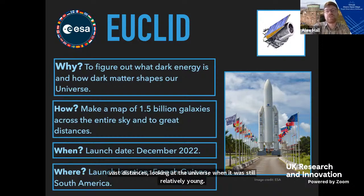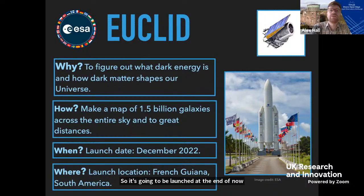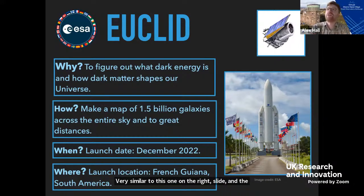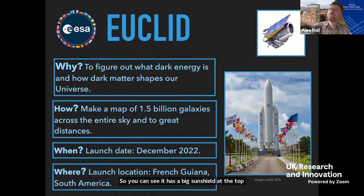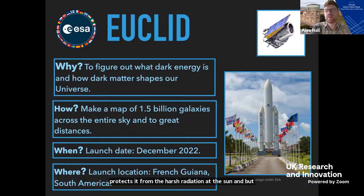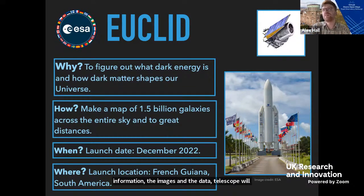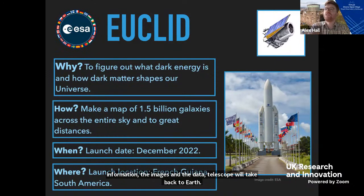Euclid is going to be launched at the end of next year — December 2022 — from the ESA spaceport in French Guiana in South America on a rocket. The artist's impression shows the telescope with a big sun shield at the top that protects it from the harsh radiation of the sun, a solar panel that provides power, and a little radio dish that will beam the images and data back to Earth.